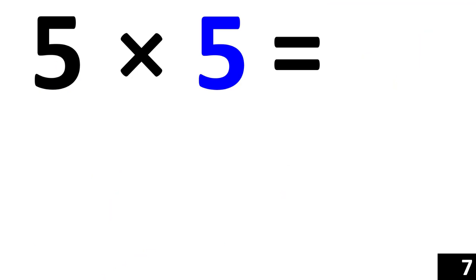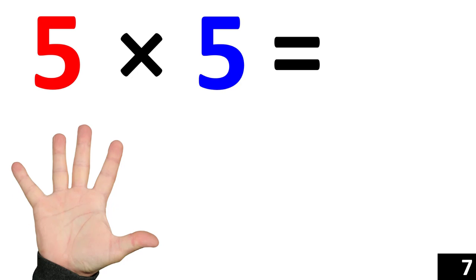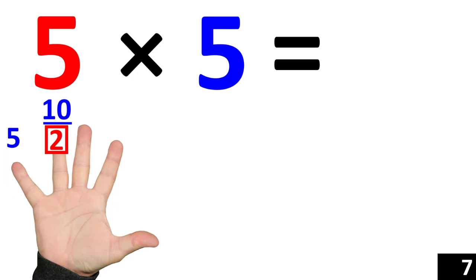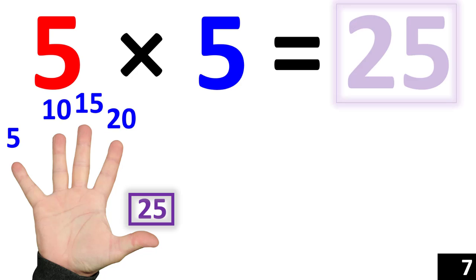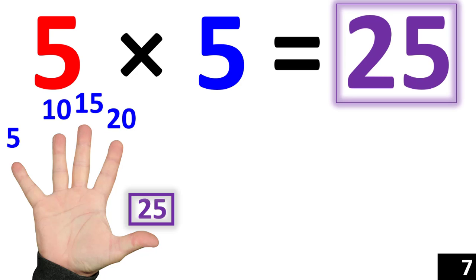5 times 5 is the same thing as counting by 5 five times. 5. 10. 15. 20. 25. This means that 5 times 5 is equal to 25.